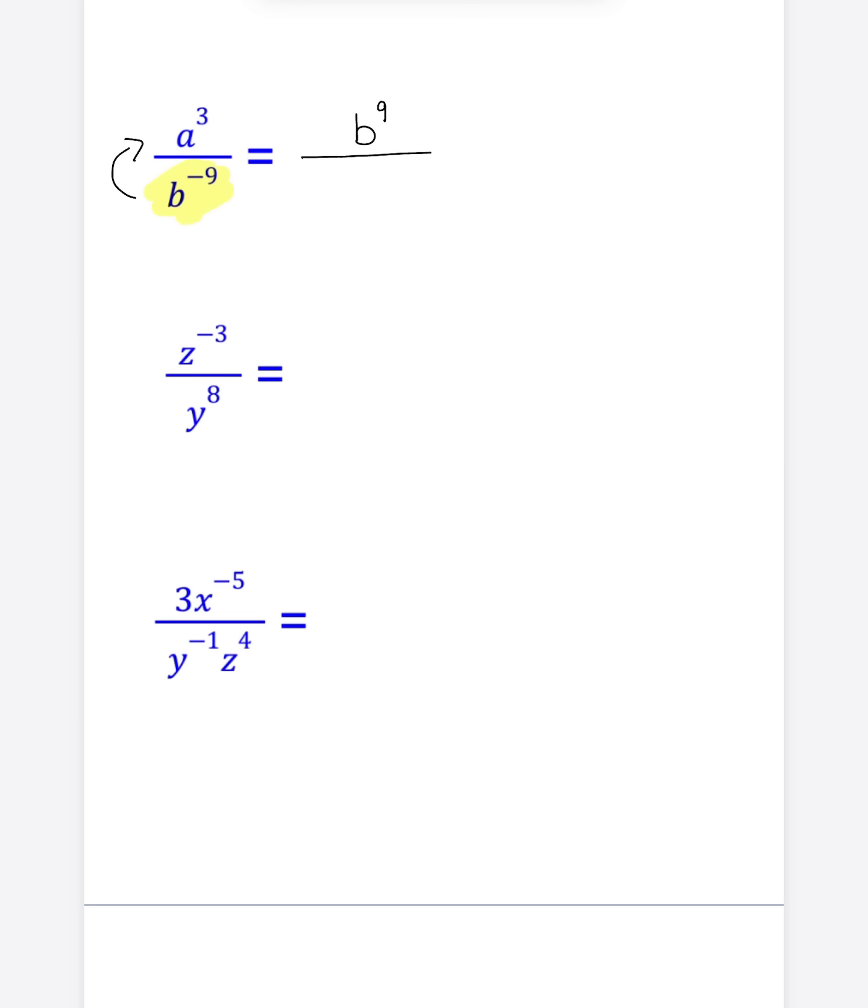And that is how simple it is. That A to the third power did not have a negative exponent, so don't do anything to it. Just leave it exactly where it was hanging out next to that B to the ninth where it's being multiplied by it. And in this case, because there's nothing in the denominator, I can actually just get rid of that fraction bar and more simply write this answer as A to the third times B to the ninth.